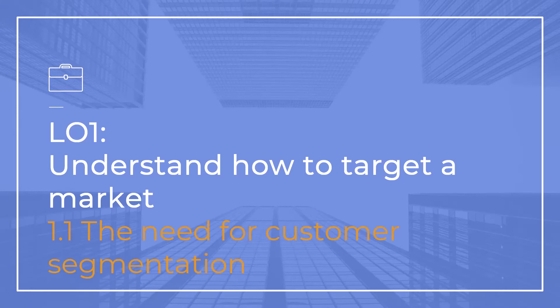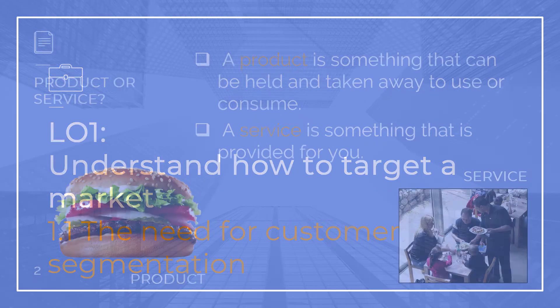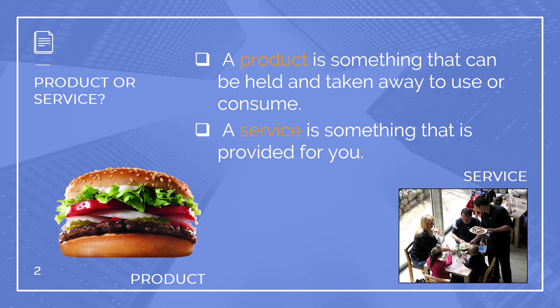This is learning outcome one: understand how to target a market. This is 1.1 from the specification — the need for customer segmentation. We're looking at a product or a service first, because it's important that you understand the difference between the two. A product is something that you can take away to use or consume, and a service is something that is provided for you.